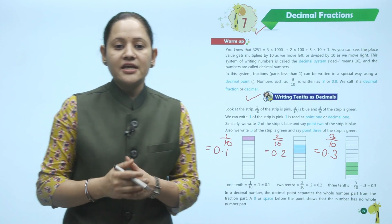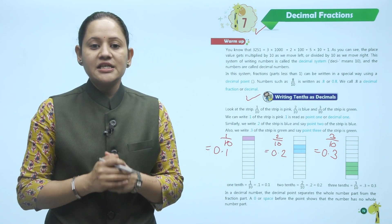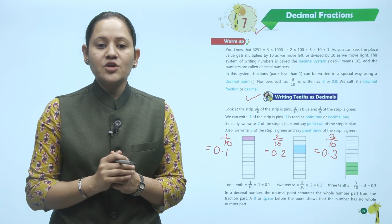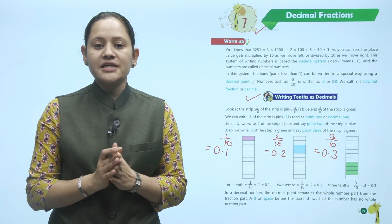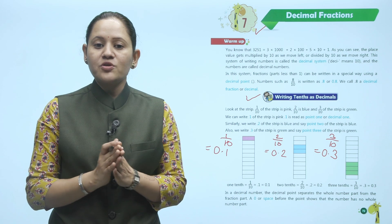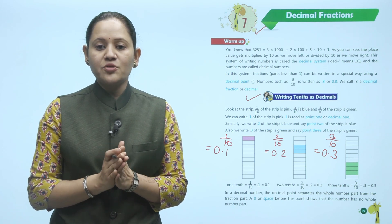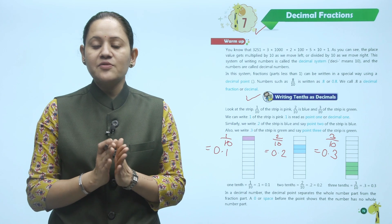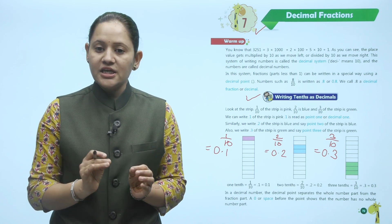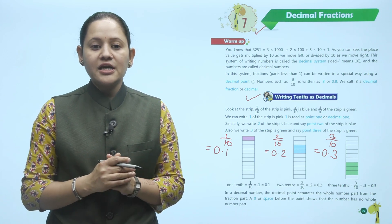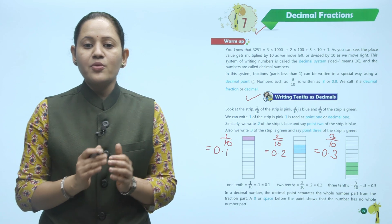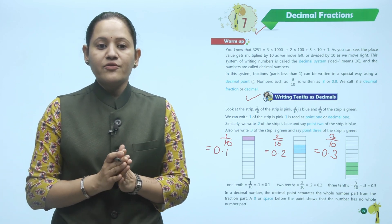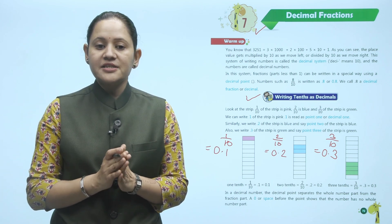1 tenth: 1 by 10 is equal to 0.1. 2 tenth: 2 by 10 is equal to 0.2. 3 tenth: 3 by 10 is equal to 0.3. The decimal point separates the whole number part from the fraction part.